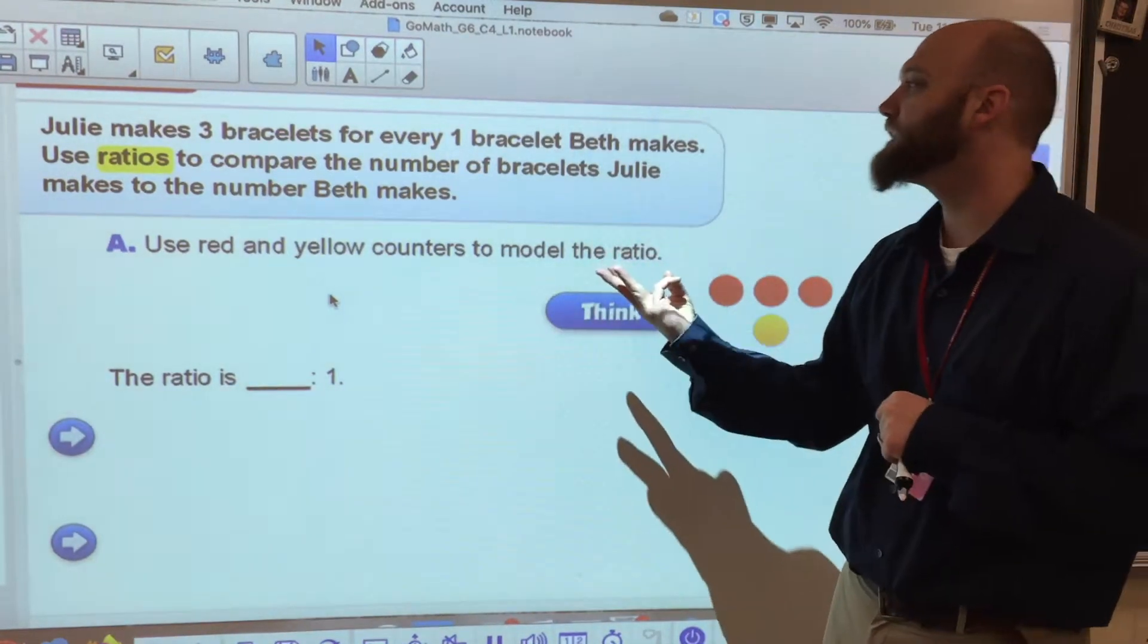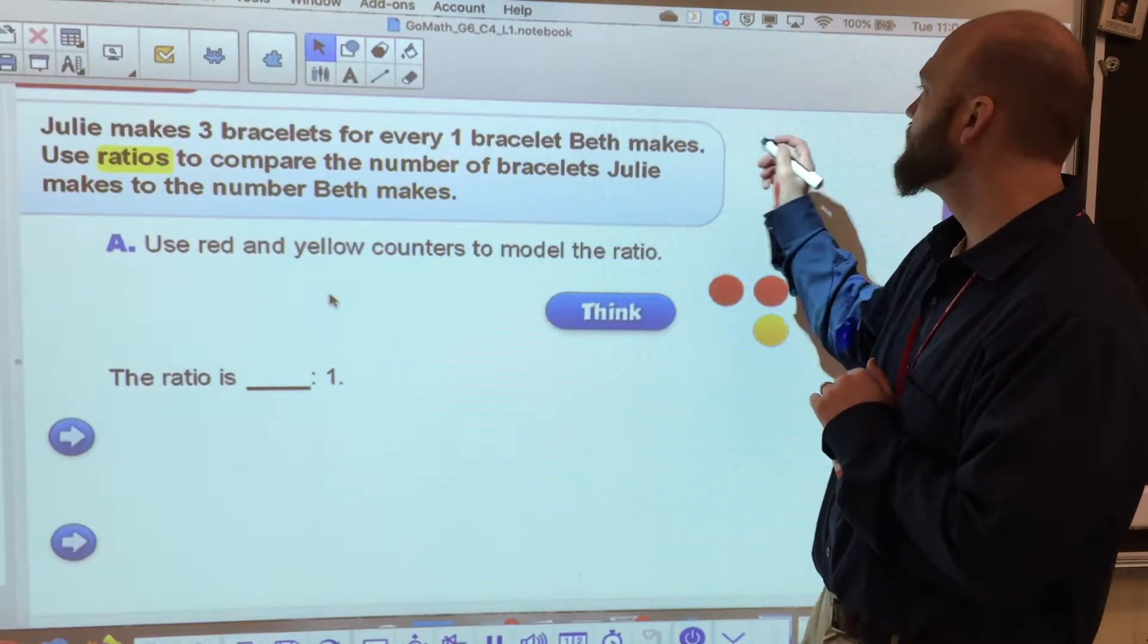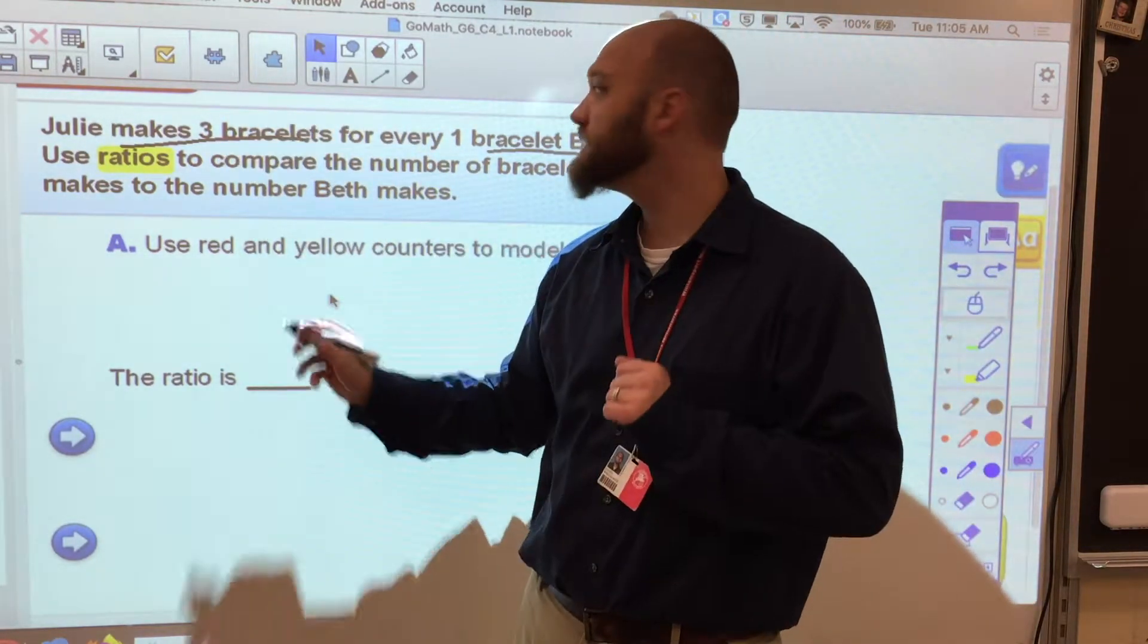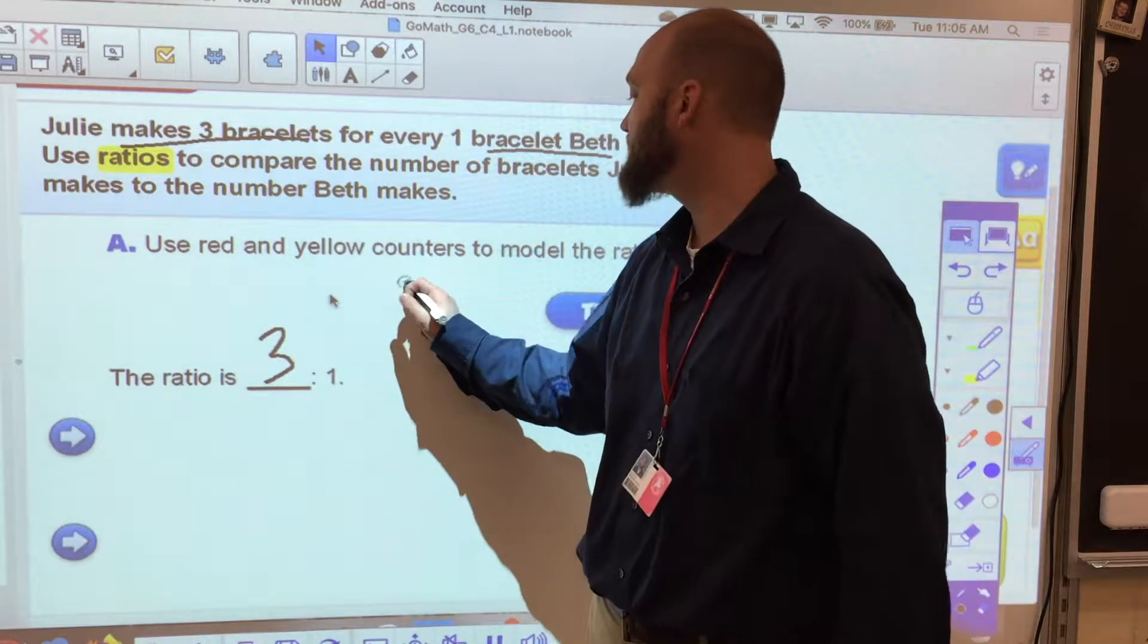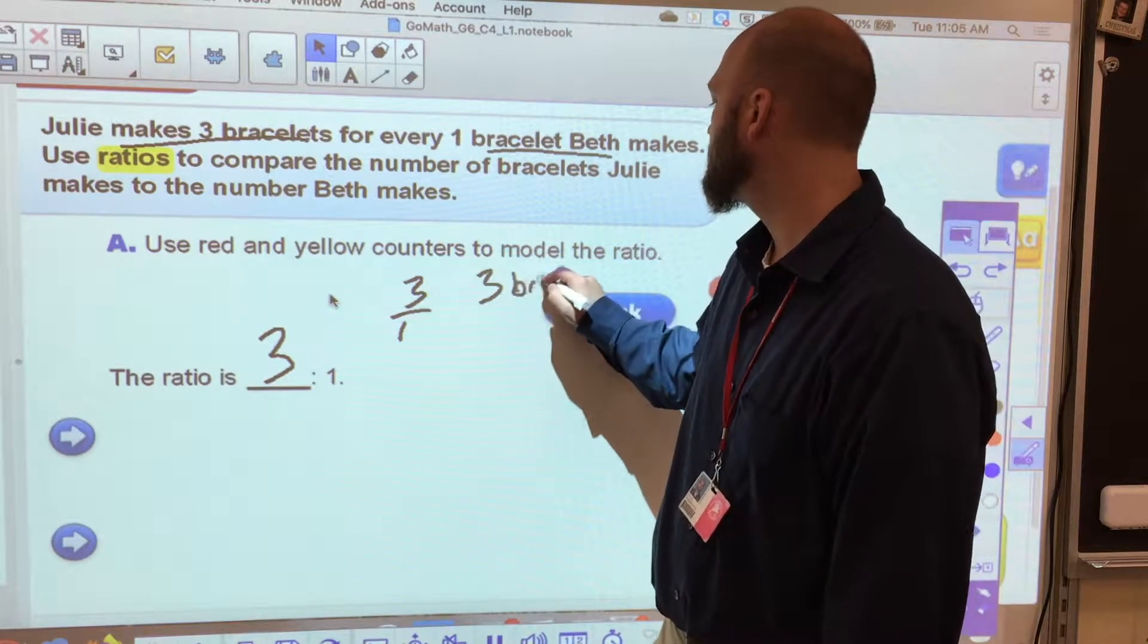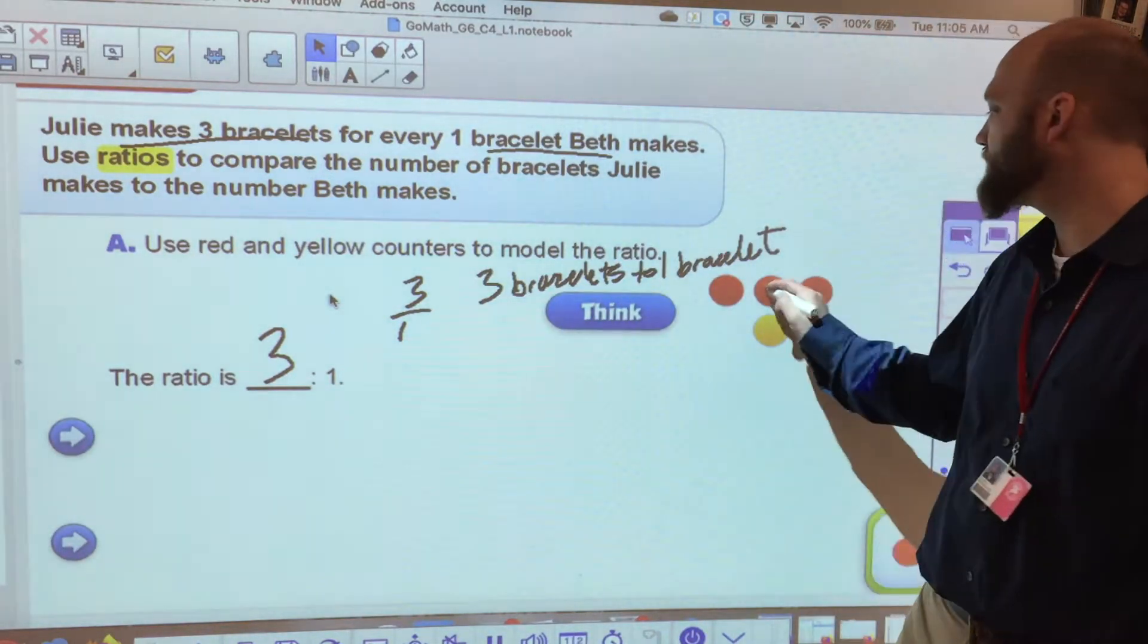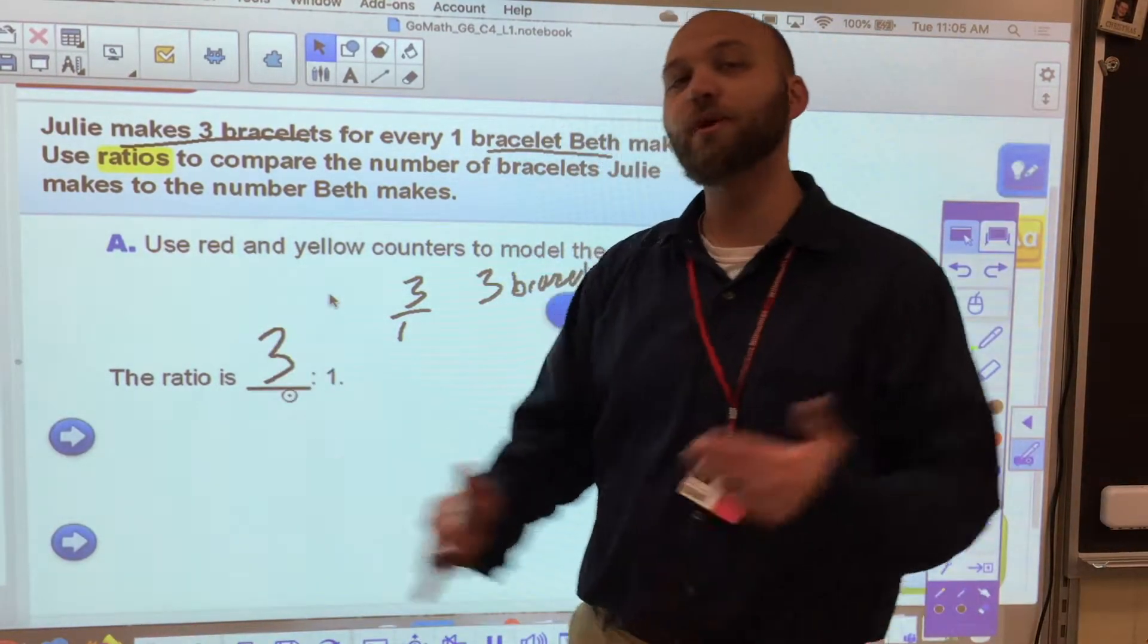Julie makes three bracelets for every one bracelet Beth makes. So we've got Julie makes three bracelets. First we're talking about Julie and then we're talking about Beth. So Julie first is a three to one ratio and we can also write this as a three to one ratio or three bracelets to one bracelet, or they can draw it right here as a three to one ratio. So there's lots of different options but this is a three to one ratio.